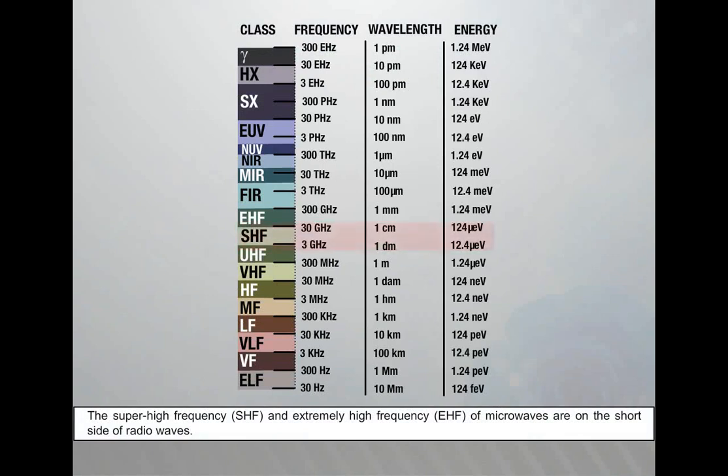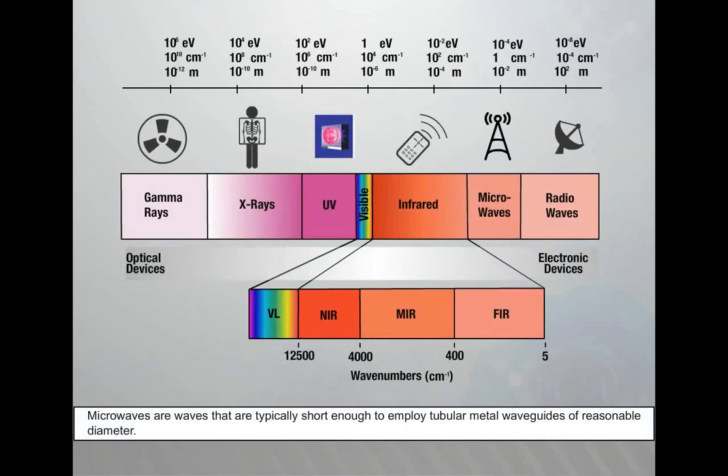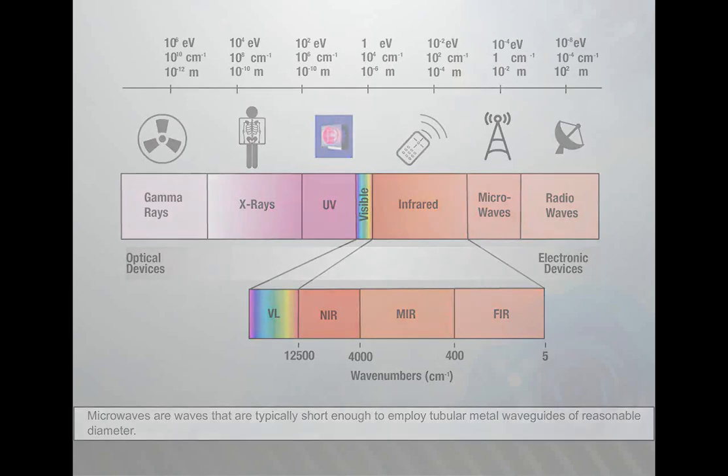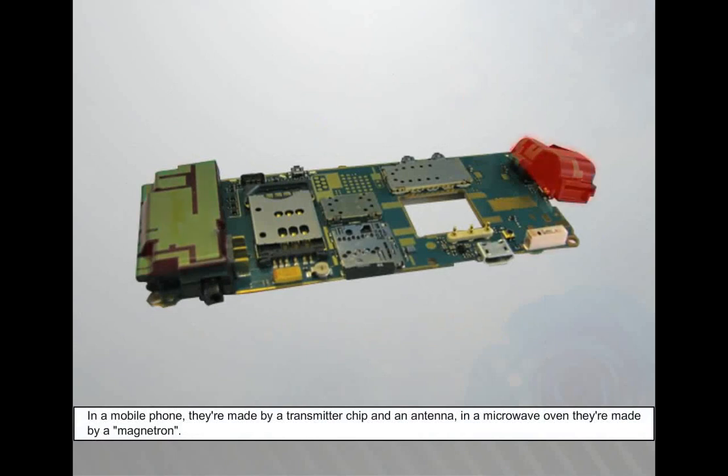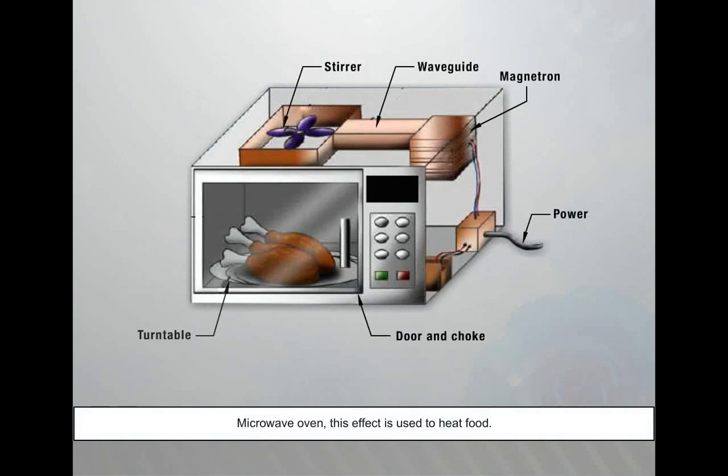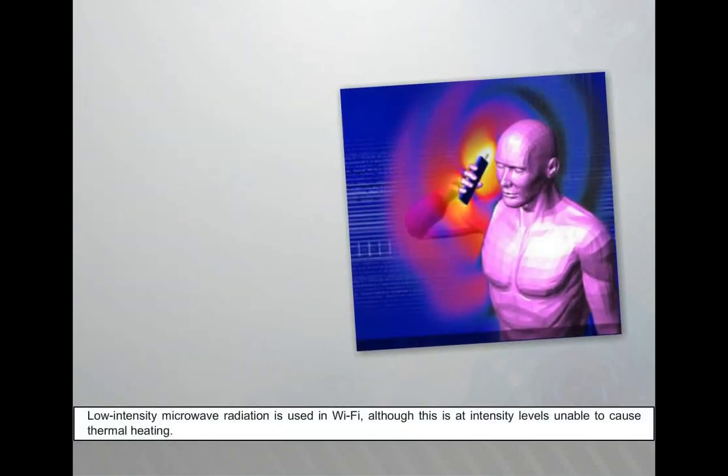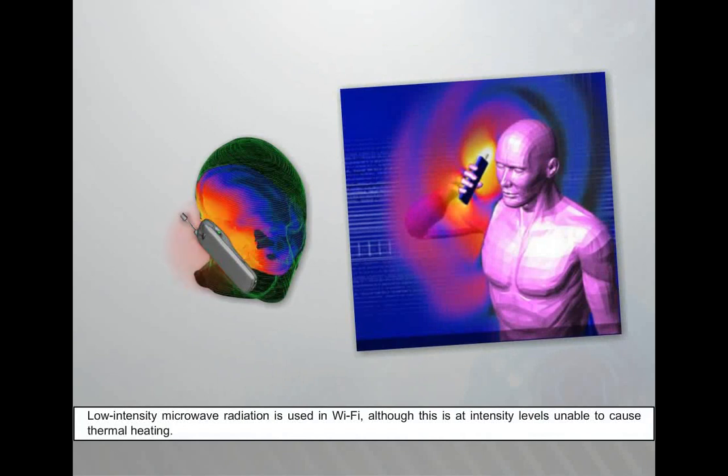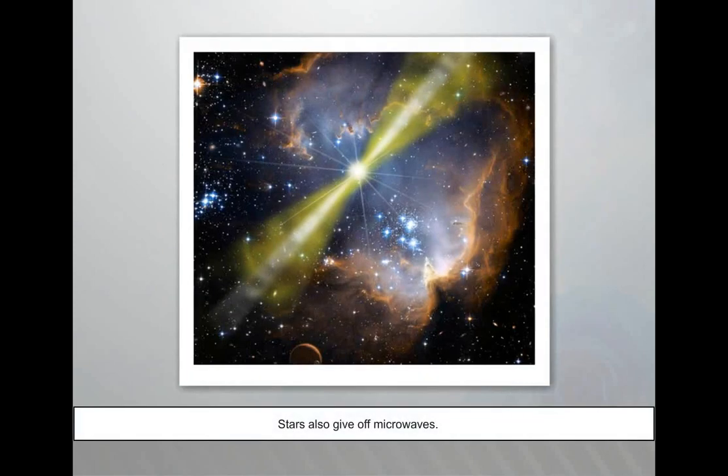The super high frequency SHF and extremely high frequency EHF of microwaves are on the short side of radio waves. Microwaves are waves that are typically short enough, measured in millimeters, to employ tubular metal waveguides of reasonable diameter. In a mobile phone, they are made by a transmitter chip and an antenna. In a microwave oven, they are made by a magnetron. This effect is used to heat food. Low-intensity microwave radiation is used in Wi-Fi, although this is at intensity levels unable to cause thermal heating. Stars also give off microwaves.